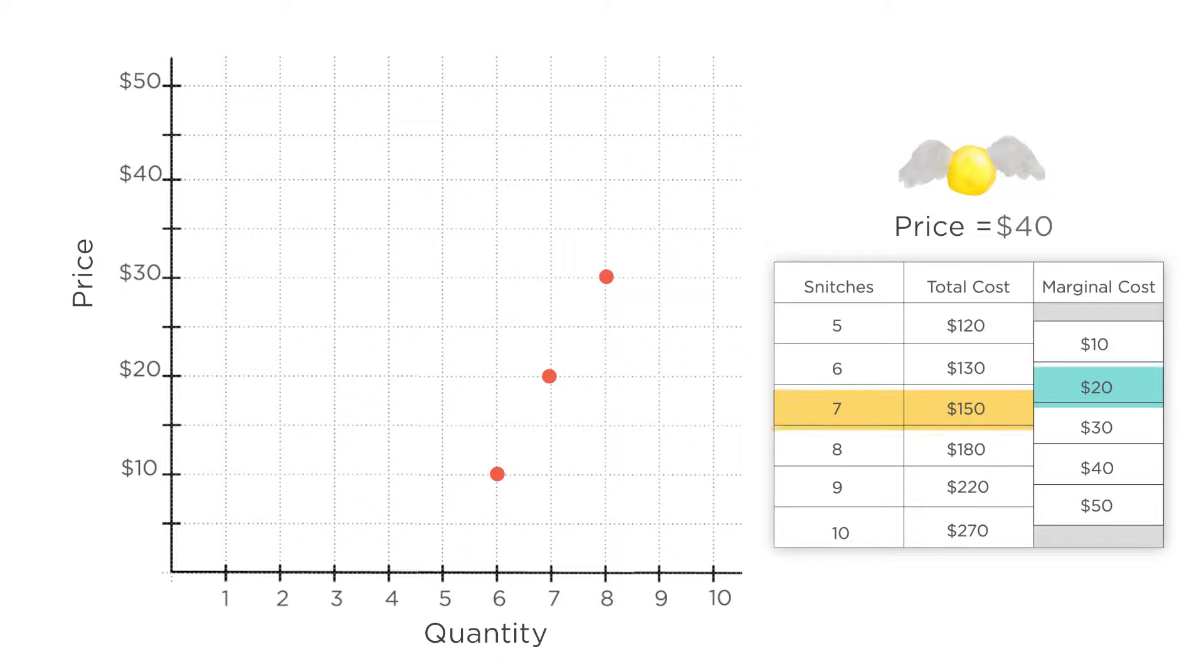We can do the same thing for prices of $40 and $50. And we can connect the dots to include intermediate prices like $13 and $47.50. Each of these points on the curve captures the answer the firm gets to the following question, asked over and over again for different prices. How many snitches should it produce to maximize profits at that price?